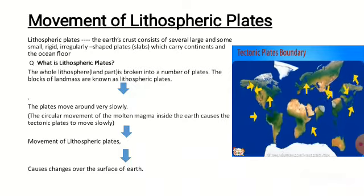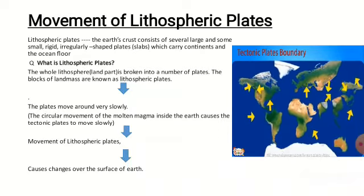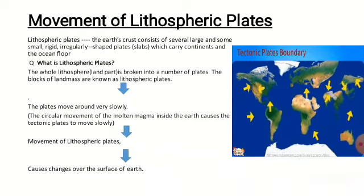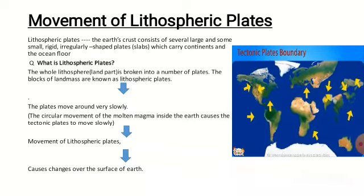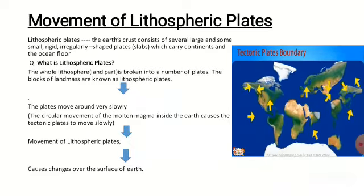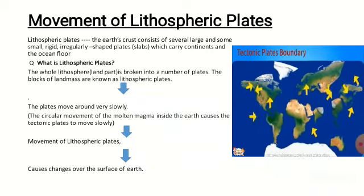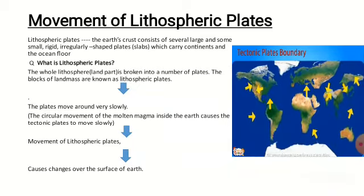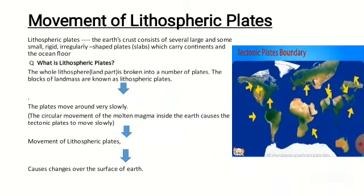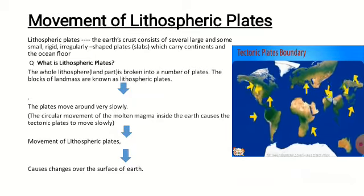The blocks of land masses are known as lithospheric plates. In the picture you can see how they are moving — they move very slowly. They move slowly because of the circular movement of the molten magma inside the earth, which causes the tectonic plates to move.